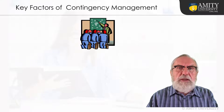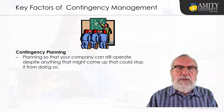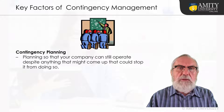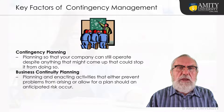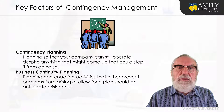Key factors of contingency management: there are several key elements we need to understand to fully grasp the concept. Contingency planning is an approach that believes if you want to run a business effectively, you must be prepared for emergencies or disruptions that relate to how your business runs. The goal is to make sure that your company can still operate despite anything that might come up. Business continuity planning involves planning and enacting activities that either prevent problems from arising or allow for a plan when anticipated risks are likely to occur — like an emergency brake in a car: rarely used, but there in case of an emergency should a critical part of your company fail.